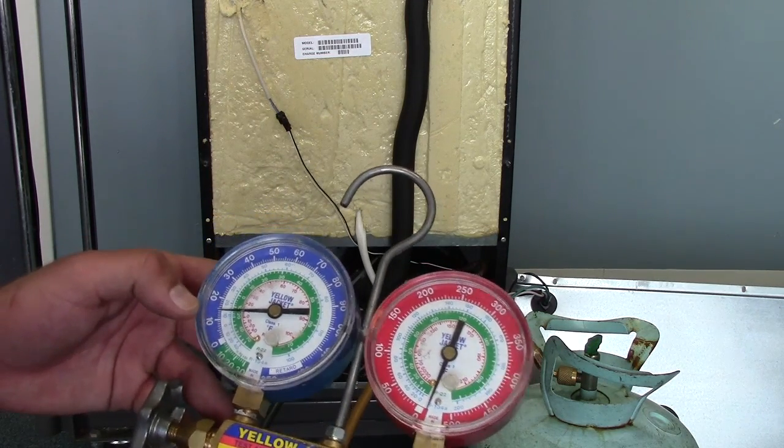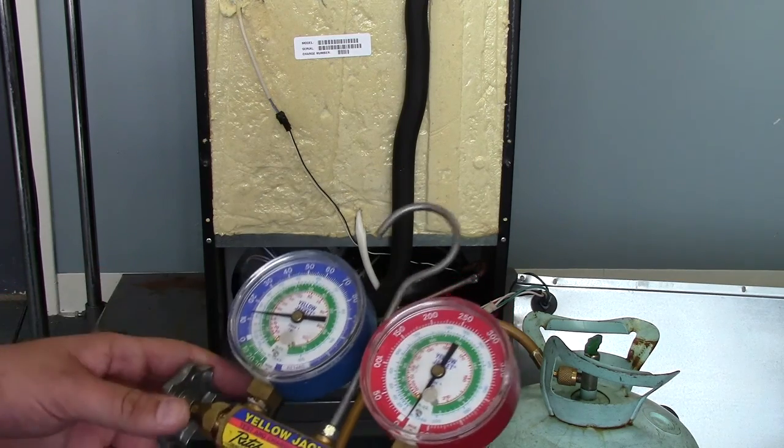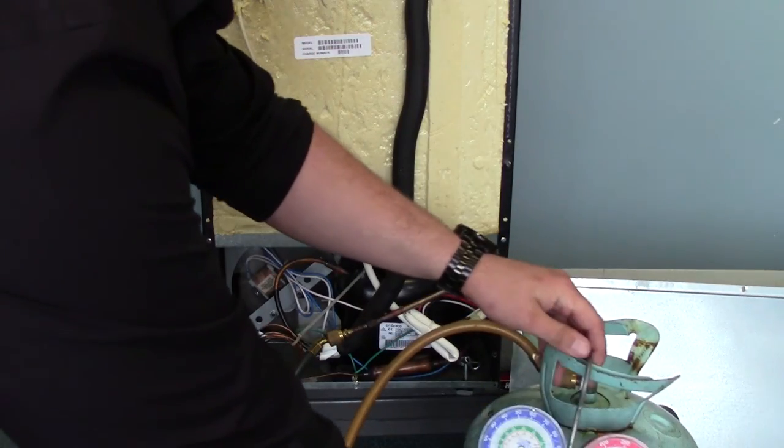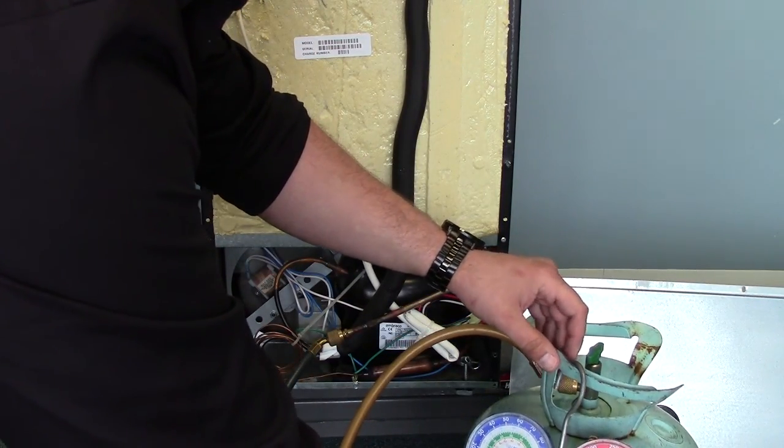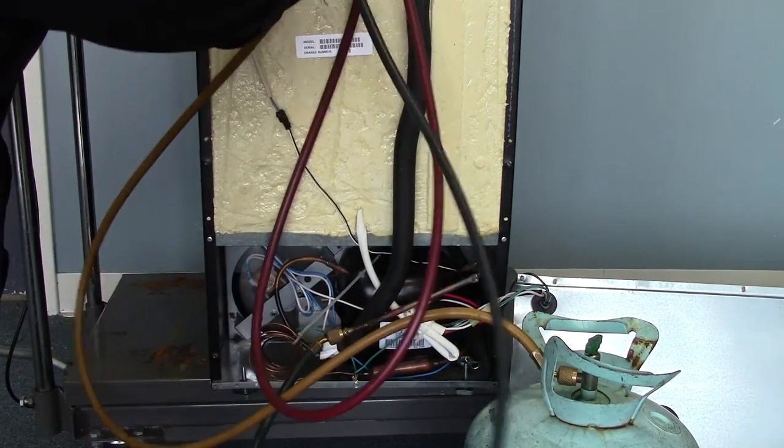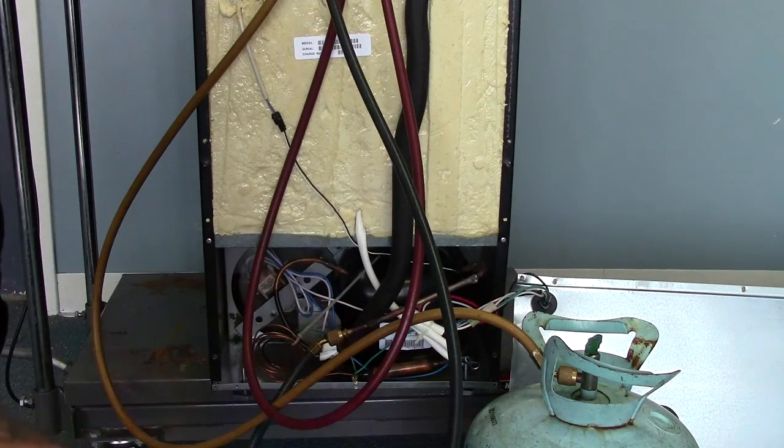Right now it's sitting at about 14 pounds of pressure. It's going to drop a little bit, it's right at 13 now. So what I'm going to do is let that sit there and what we're going to look for is the evaporator, the coils on the inside of the unit to get a good frost pattern going all the way down the back wall.